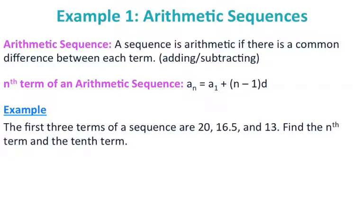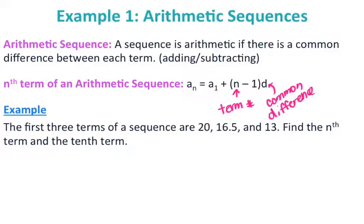The first thing we're looking at is the definition of an arithmetic sequence. An arithmetic sequence is a sequence where there is a common difference between each term — basically, you are adding or subtracting a fixed amount. There is a formula: a_n equals a1 plus (n minus 1) times d, where n represents the term number and d represents the common difference, which is whatever you're adding or subtracting every single time.